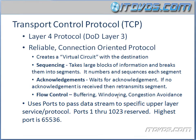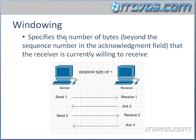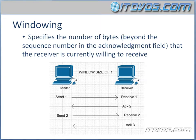Now let's take a closer look at windowing, which is one of our types of flow control for TCP. Windowing specifies the number of bytes beyond the sequence number in the acknowledgment field that the receiver is currently willing to receive. This is easiest to understand using segments instead of bytes, but in the real world, windowing uses the number of bytes, not the number of segments.